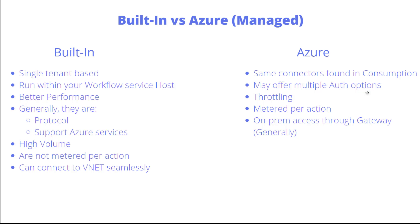For on-premises resources, Azure connectors generally access those through the on-premises data gateway, because they don't have direct VNet support. A common question is: I have Logic Apps Standard but I'm using an Azure connector — can I still connect through my VNet? The answer is no. Traffic can still be routed through the VNet initially, but it will hit a public endpoint in Azure where these connectors are hosted, and communication continues from there. You cannot use VNet connectivity through Azure connectors; you need the on-premises data gateway to traverse a local network.